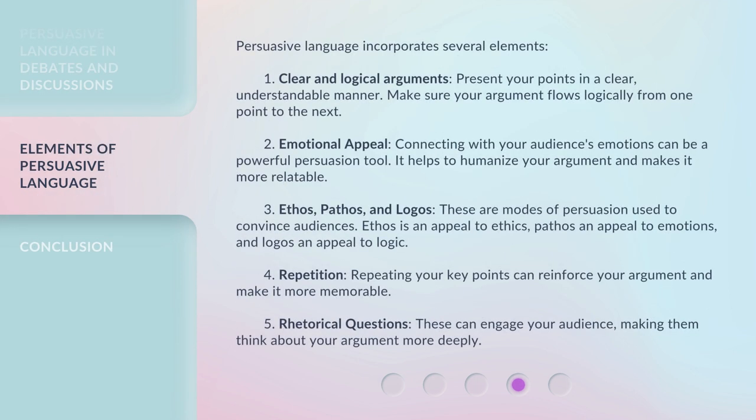Persuasive language incorporates several elements. First, clear and logical arguments: present your points in a clear, understandable manner, and make sure your argument flows logically from one point to the next. Second, emotional appeal: connecting with your audience's emotions can be a powerful persuasion tool. It helps to humanize your argument and makes it more relatable.